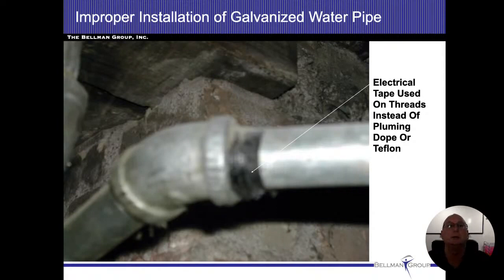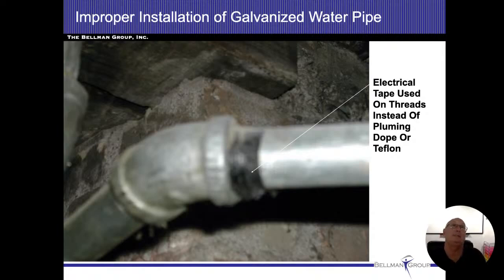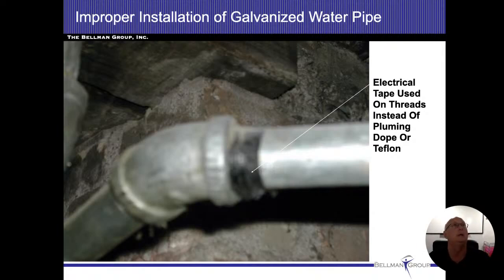This is kind of a joke as it comes in there, but this we actually did find. It was a galvanized plumbing system and somebody decided to use electrical tape instead of Teflon tape or dope. Surprisingly, it didn't leak — so maybe that is something that can work.